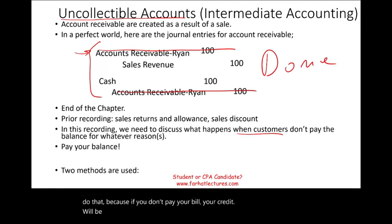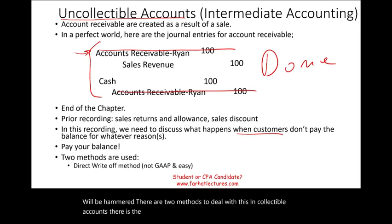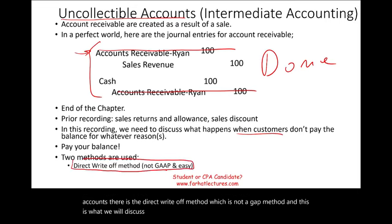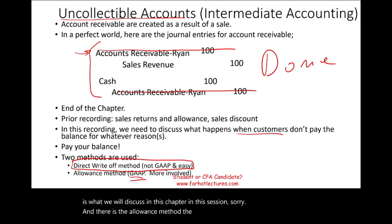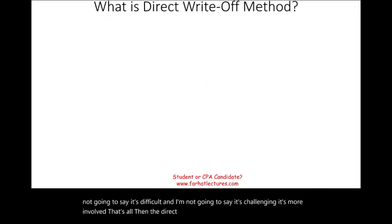There is the direct write-off method, which is not a GAAP method — and this is what we will discuss in this session. And there's the allowance method, which is the GAAP method. The allowance method is more involved than the direct write-off method, but I'm not going to say it's difficult. In this session we would look at the direct write-off method.